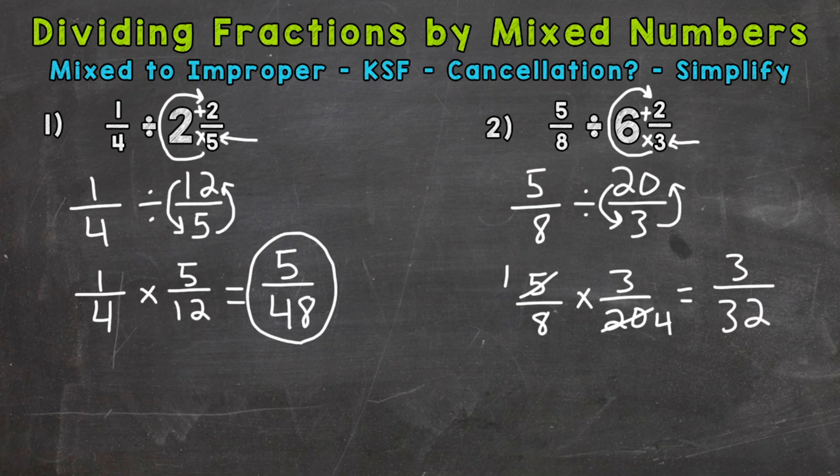So we get to three over thirty-two. Look to see if we can simplify, but in the case of that answer, it is in simplest form. The only common factor between three and thirty-two is one, so that's our final answer.